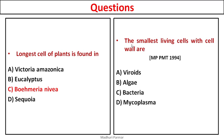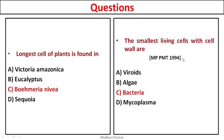Next question: the smallest living cells with cell wall. It is important to read every word — the smallest living cell with a cell wall. Options: viroids, algae, bacteria, mycoplasma. Viroids are just infectious RNA. Algae have cell walls but are not the smallest. Mycoplasma and PPLO lack cell walls — they are exceptions in bacteria and do not have cell wall. So the answer is bacteria — bacteria are the smallest cells which have a cell wall.